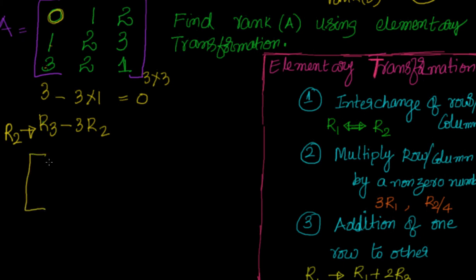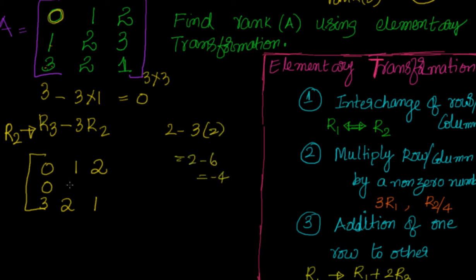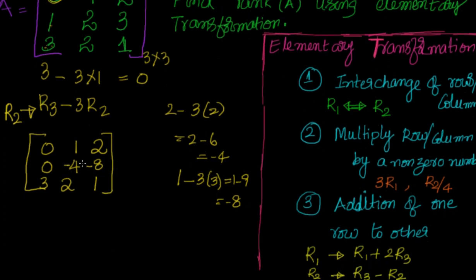After the transformation R2 = R3 minus 3R2, the matrix changes. Row 1 stays as [0 1 2], Row 3 stays as [3 2 1]. For the new Row 2: 3 minus 3×1 = 0; 2 minus 3×2 = 2 minus 6 = minus 4; 1 minus 3×3 = 1 minus 9 = minus 8. Now in elementary transformations, you can also multiply by a nonzero number — so I can multiply by minus 1/4.